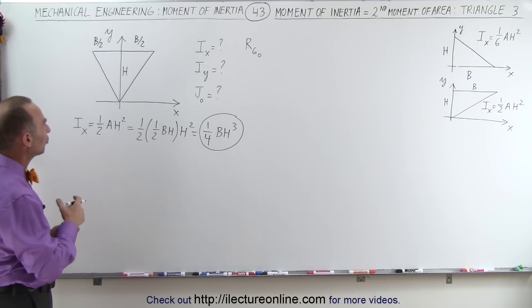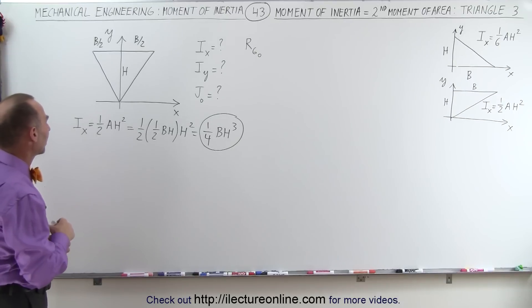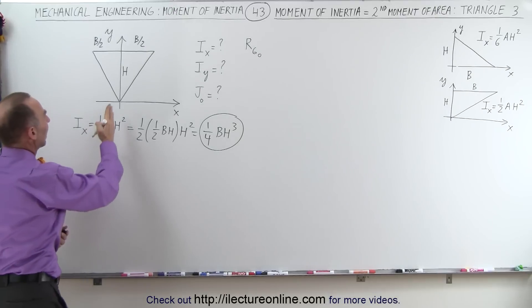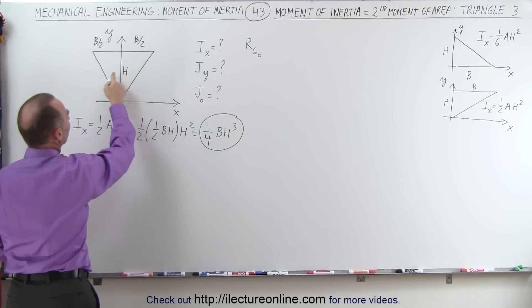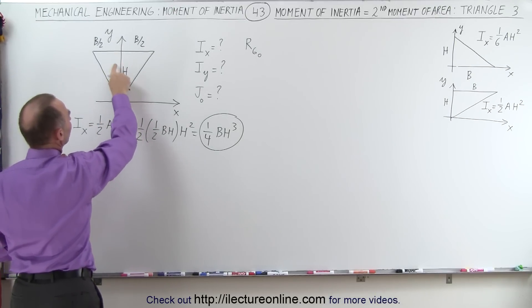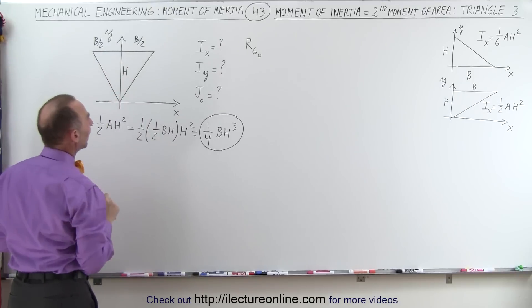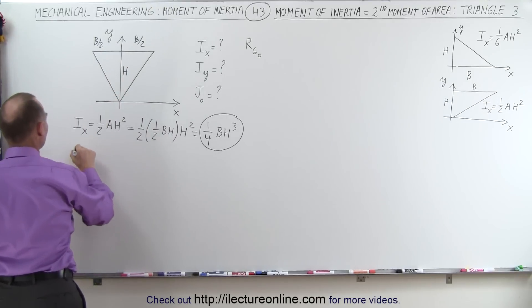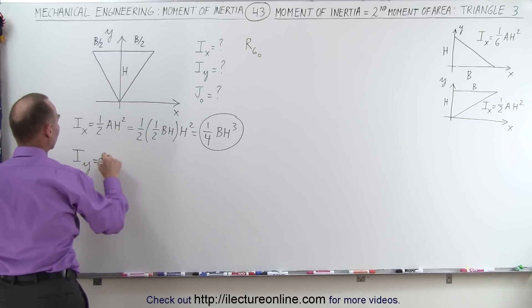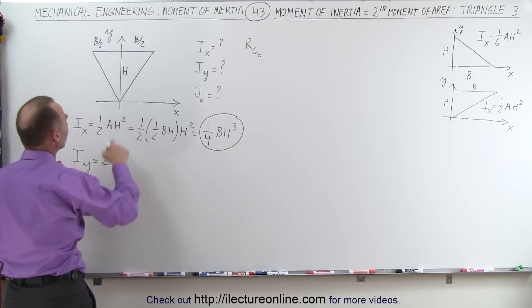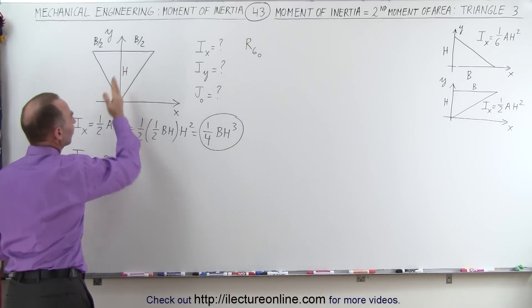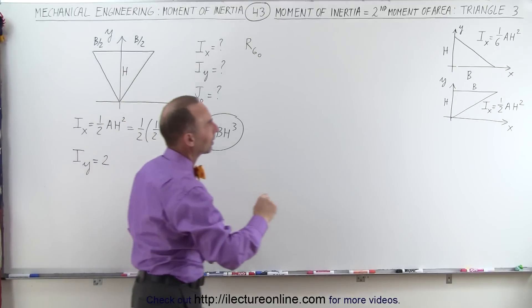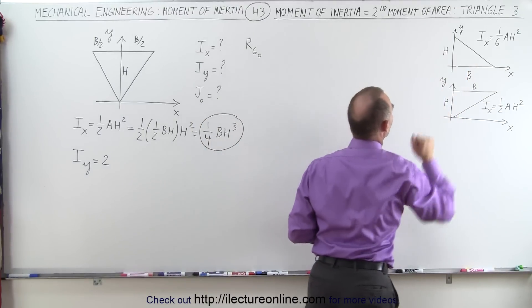Now let's find the moment of inertia relative to the y-axis. Notice we have the triangle split into two halves — they're similar, they're opposite one another, and they're the same in area. So the moment of inertia relative to the y-axis is equal to twice the moment of inertia of each of these halves, and those halves look a lot like the first situation.